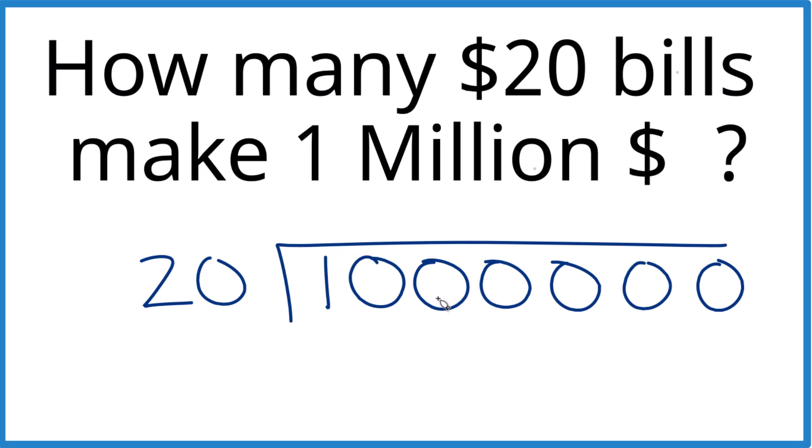So 20 goes into 10 5 times. And then I'm just going to take these zeros here and put it after that. So if you took 50,000 here times 20, you would get one million.